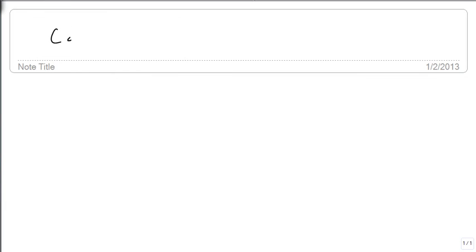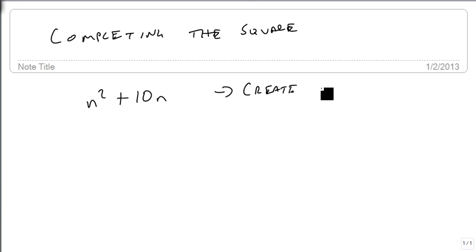We're now going to talk about completing the square. And the idea here is we have something, let's say n squared plus 10n, and we want to create a perfect square trinomial. This is what we mean by completing the square.